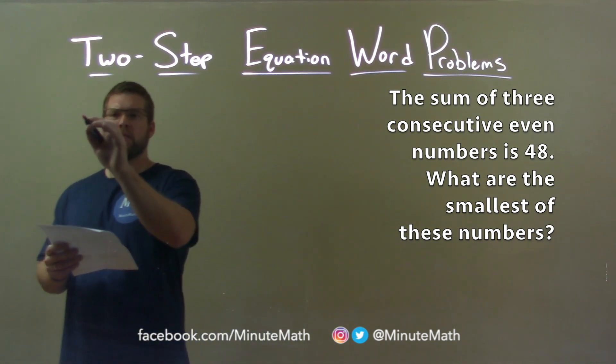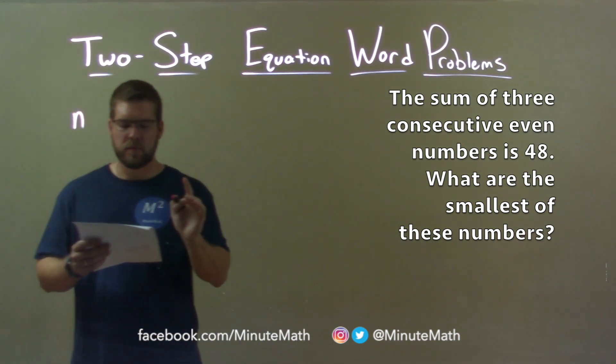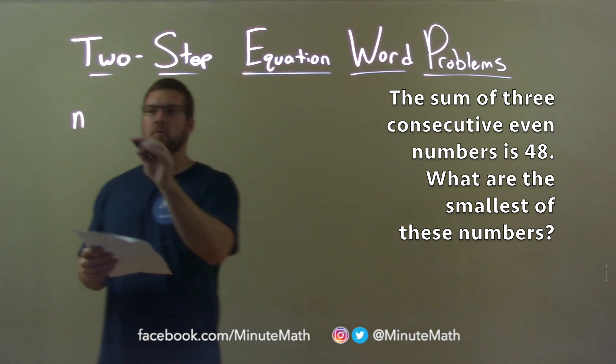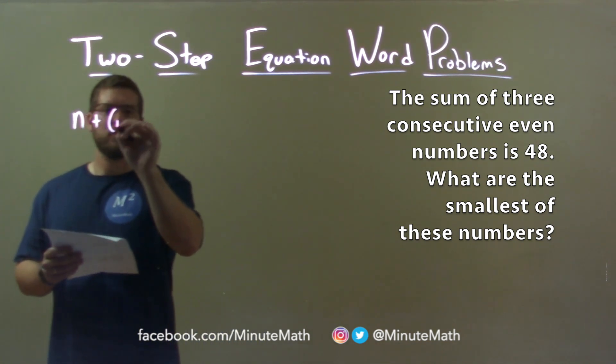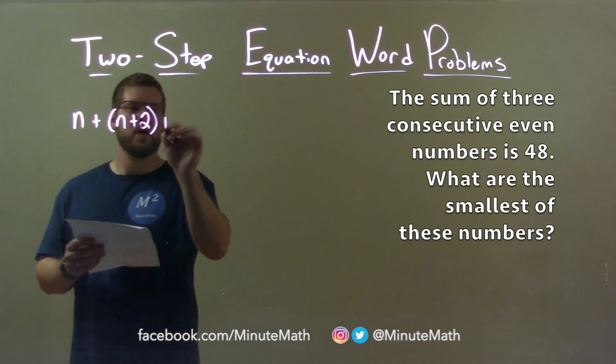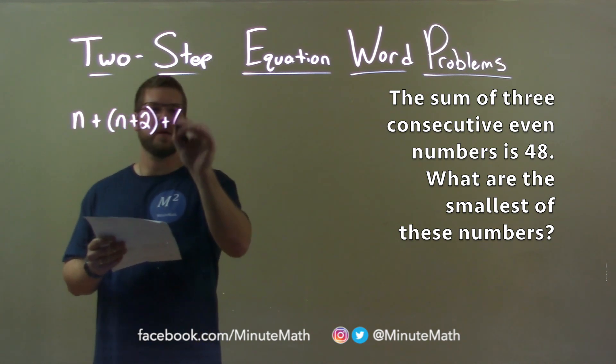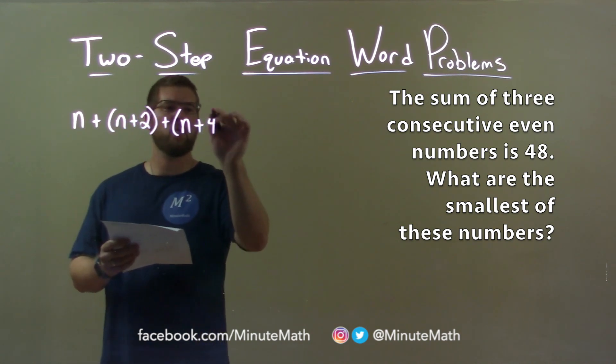Well if the first number, first even number, let's call that n. Then the next even number will be 2 greater than n. So we get n plus 2. Then the next even number would be n plus 4.